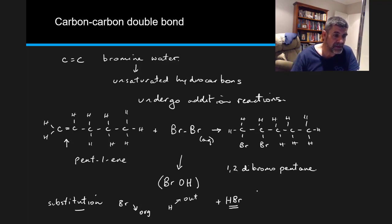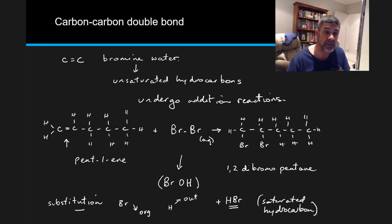So this is what we get if we have a saturated hydrocarbon. And this is why this is such a good test for the presence of the carbon-carbon double bond, because the color of the bromine is sort of an orangey red to brown, depending on how fresh and how long it's been sitting around.